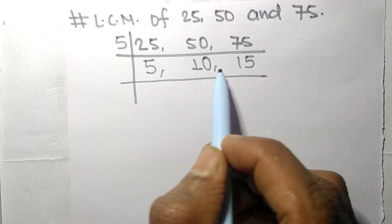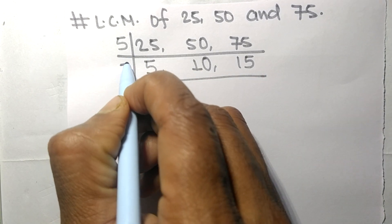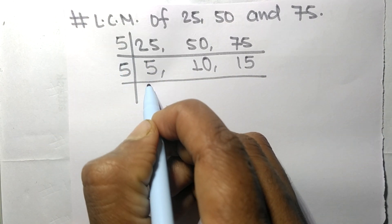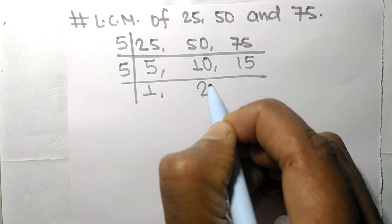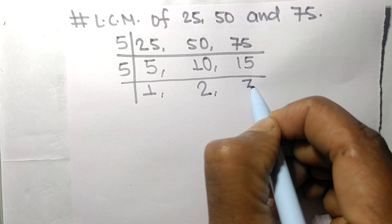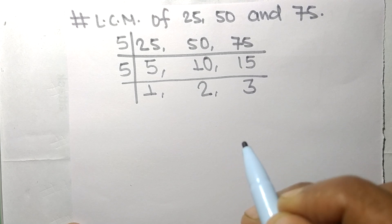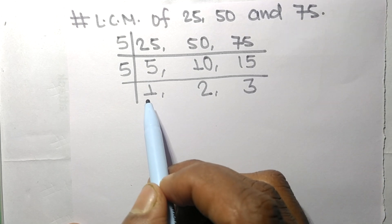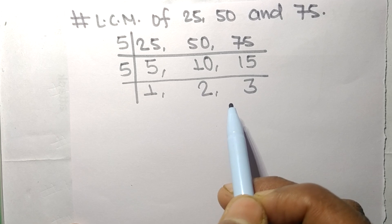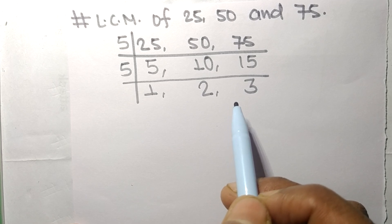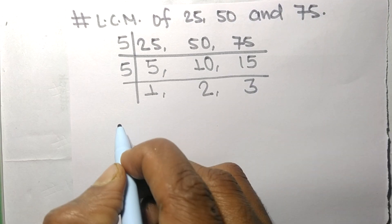These all numbers are divisible by 5. 5 times 1 means 5, 5 times 2 means 10, 5 times 3 means 15. Now the numbers 1, 2, and 3 are not divisible by any other same numbers, therefore